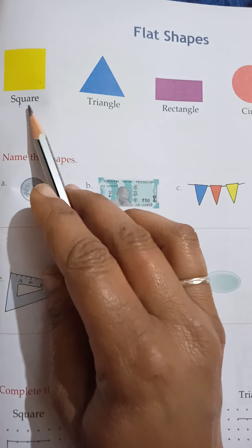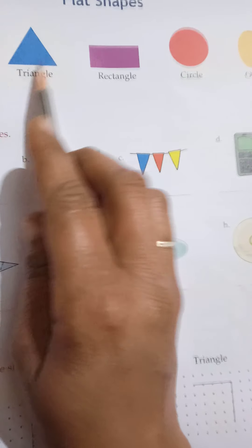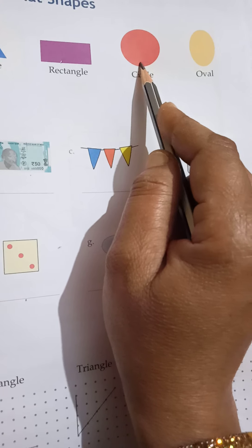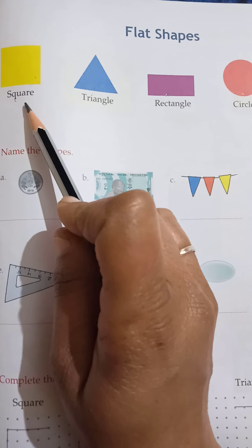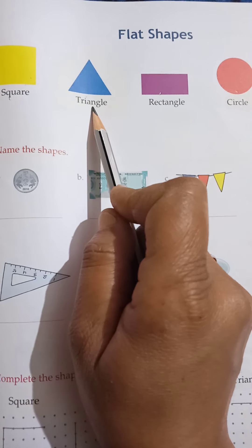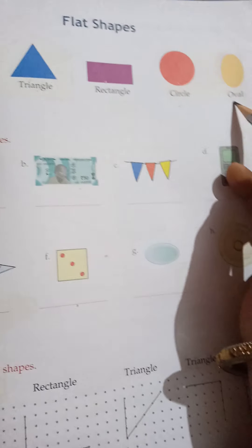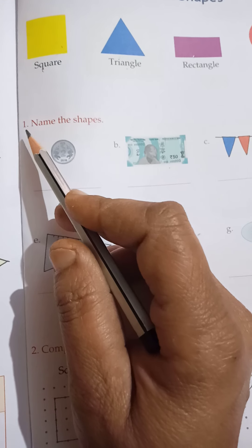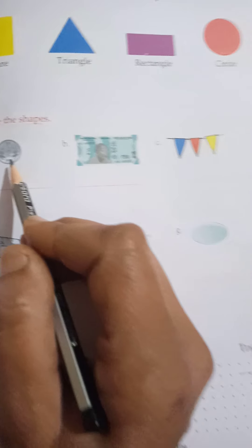This is a square, this is a triangle, this is a rectangle, this is a circle, and this is an oval. Square, triangle, rectangle, circle, and oval. Now come to the next point — number one: name the shapes. Children, look at this picture.